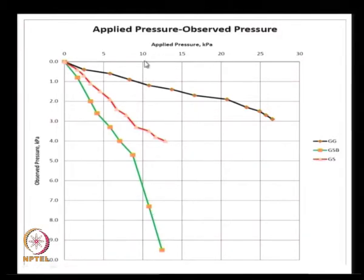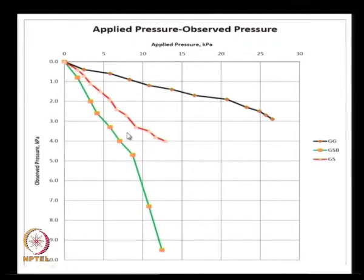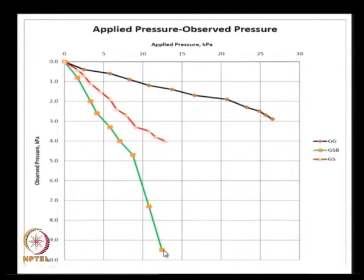A key graph summarizes the relationship between applied pressure and measured pressure below the geocell. For the 150 mm geocell filled with GSB, even at an applied pressure of 25 kPa, the measured pressure was only about 3 kPa. In contrast, a 150 mm GSB layer alone transmitted pressures almost directly — for example, an applied pressure of 13 kPa resulted in a measured pressure of about 9.5 kPa. The response of the geocell also depends on the infill material; a stronger infill material gives a much stronger response.